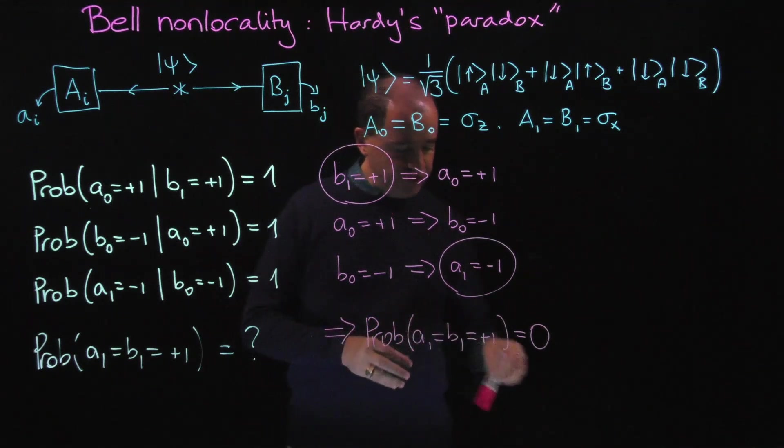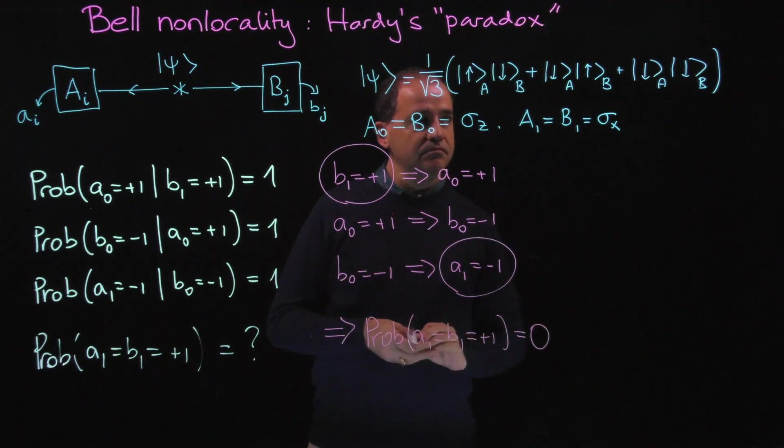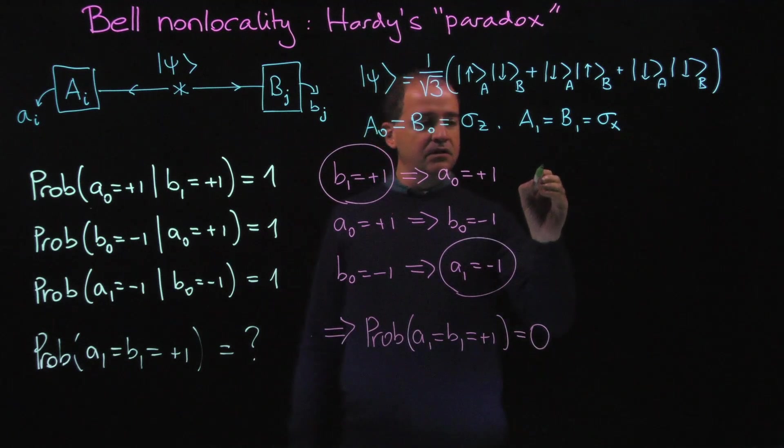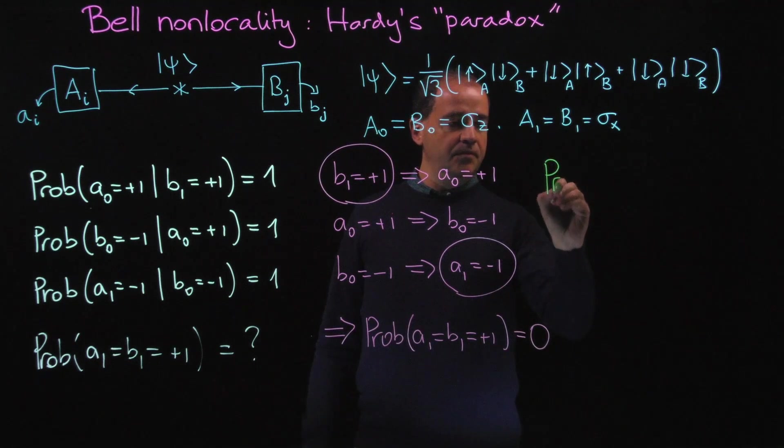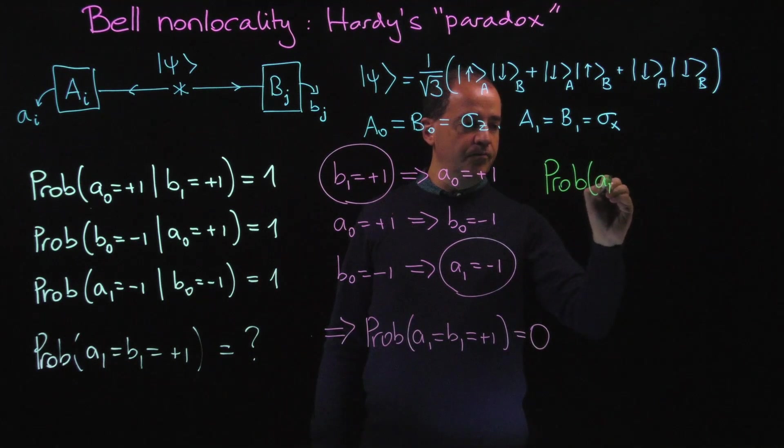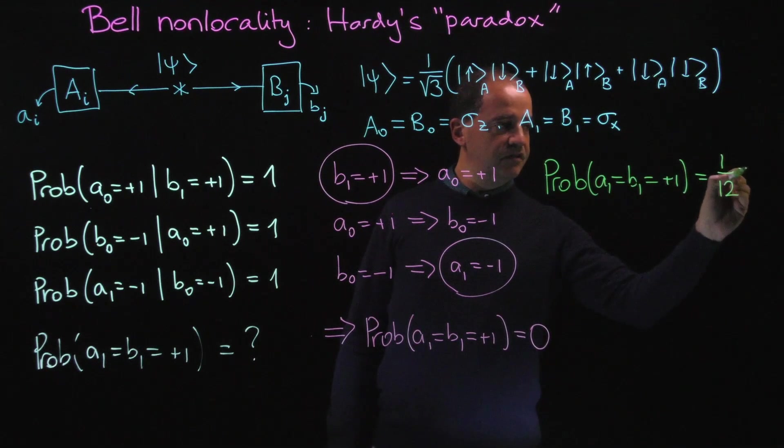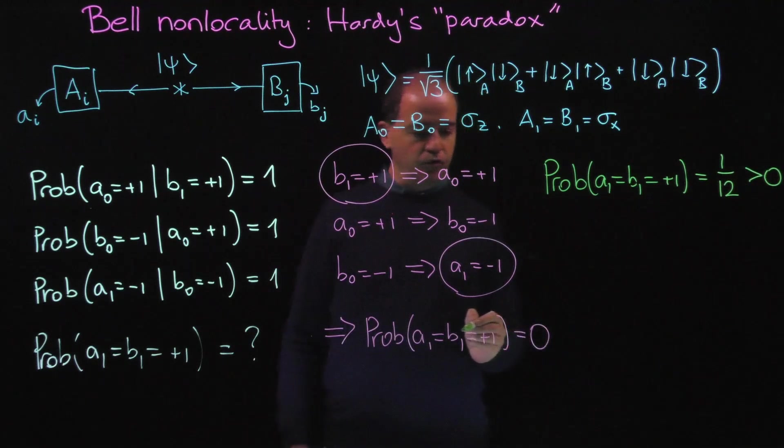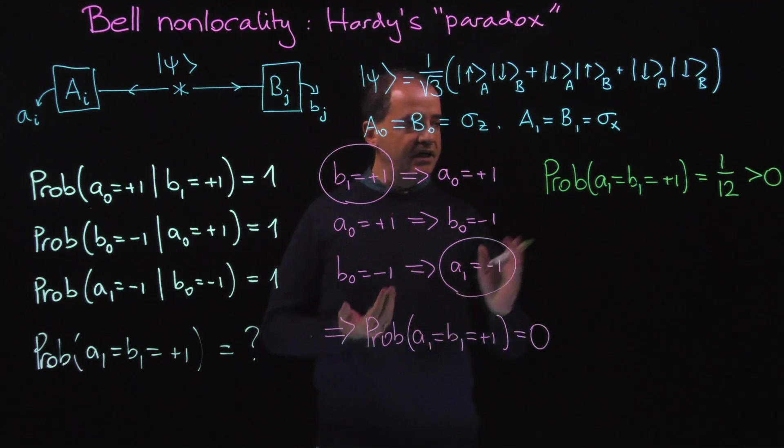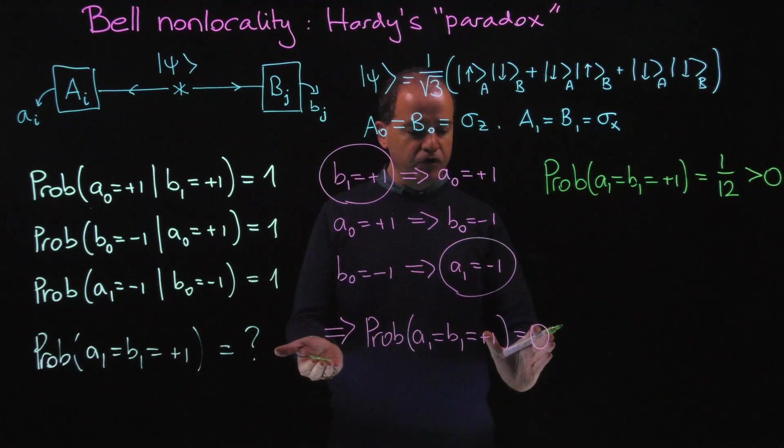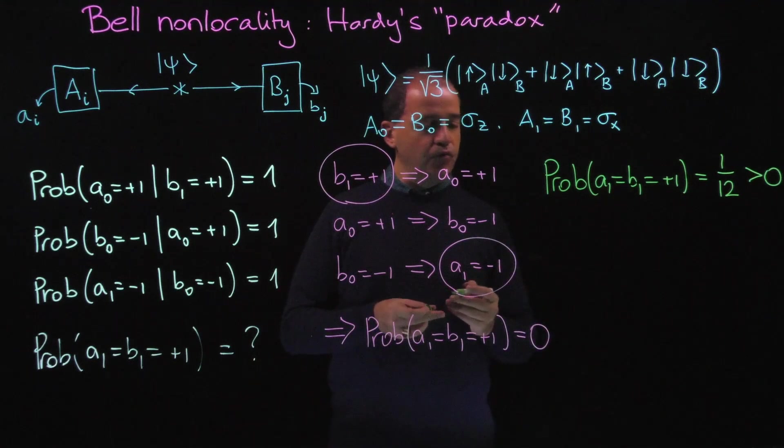Now the quantum prediction, if one does the quantum calculation, is the following: the probability of finding both A1 and B1 equals plus 1 is 1 over 12, certainly larger than 0. We have a contradiction between the classical logic prediction and the prediction of quantum theory.